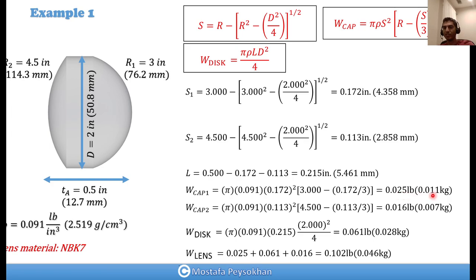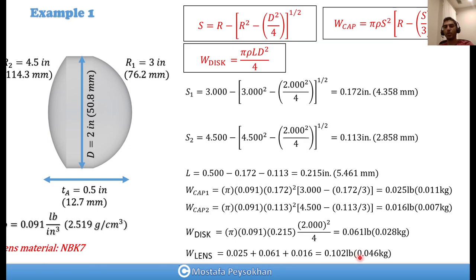That gives 11 grams for cap 1. Using the same equation for cap 2, we get 7 grams. Then we calculate the weight of the disc using the disc equation, which gives 28 grams. The total weight of the lens is the weight of cap 1 plus cap 2 plus the disc, which adds up to 0.1 pounds or 46 grams.